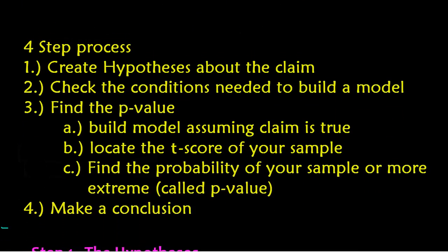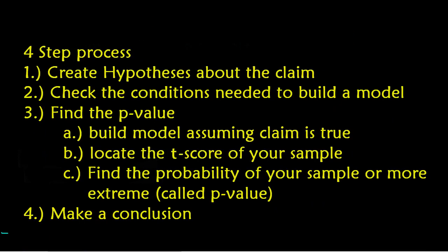All right, now the best thing is, like I already kind of said to you guys, is that the four steps to do a significance test for a mean are the exact same four steps for a proportion. Step one is to create your hypotheses about the claim. Step two is to check your conditions that you need to build a model. Because remember, the idea is that a single sample, one sample mean all by its lonesome, honestly tells us nothing. We need to compare that sample to a picture of all possible samples of that size. And that is, of course, called a sampling distribution.